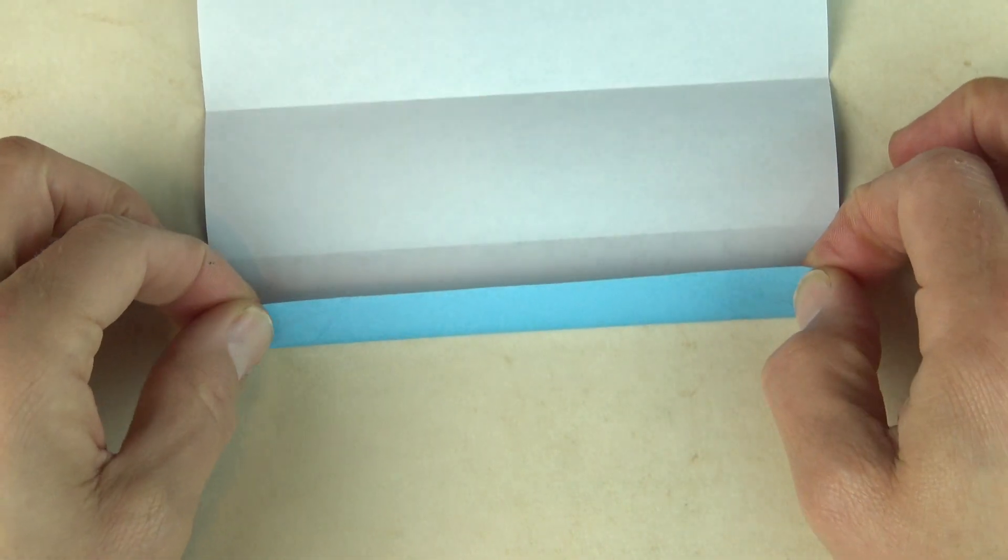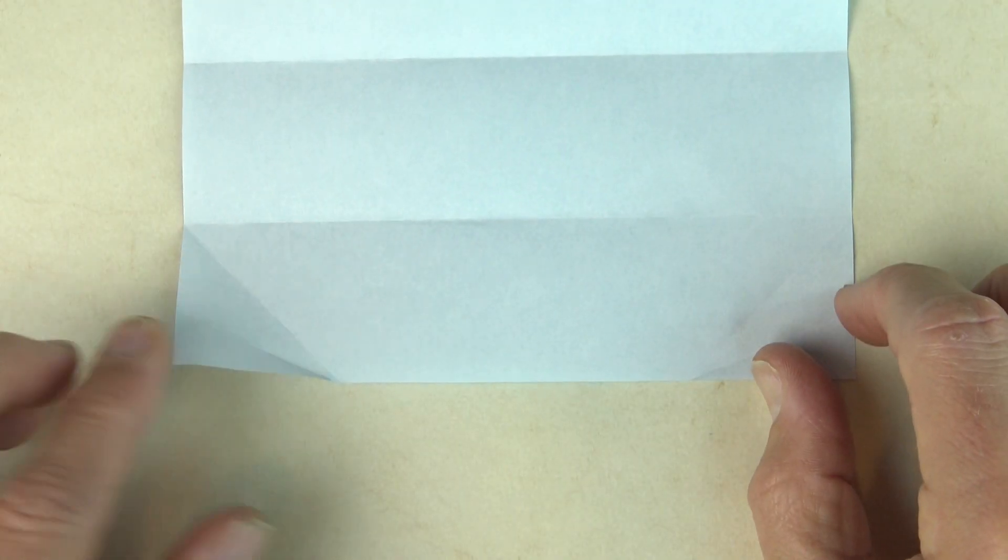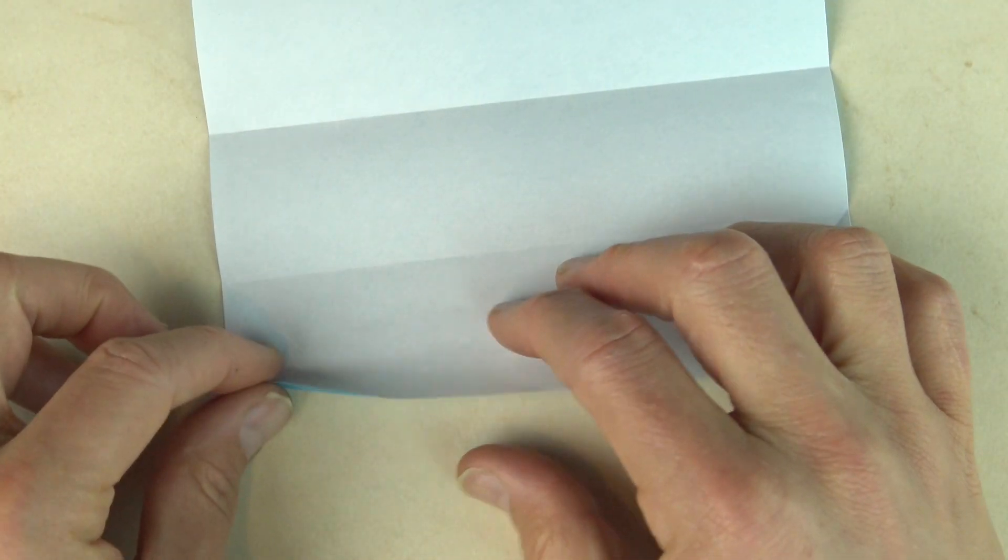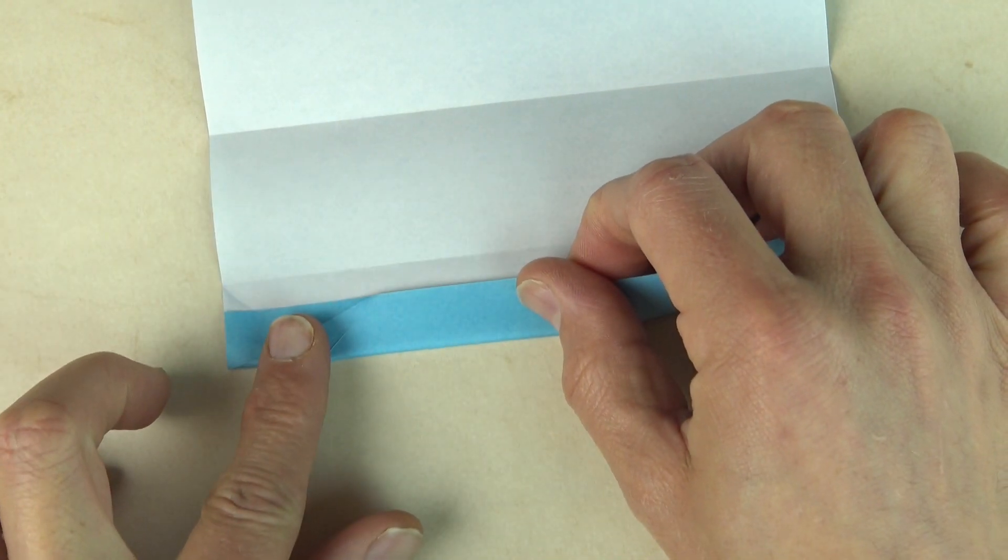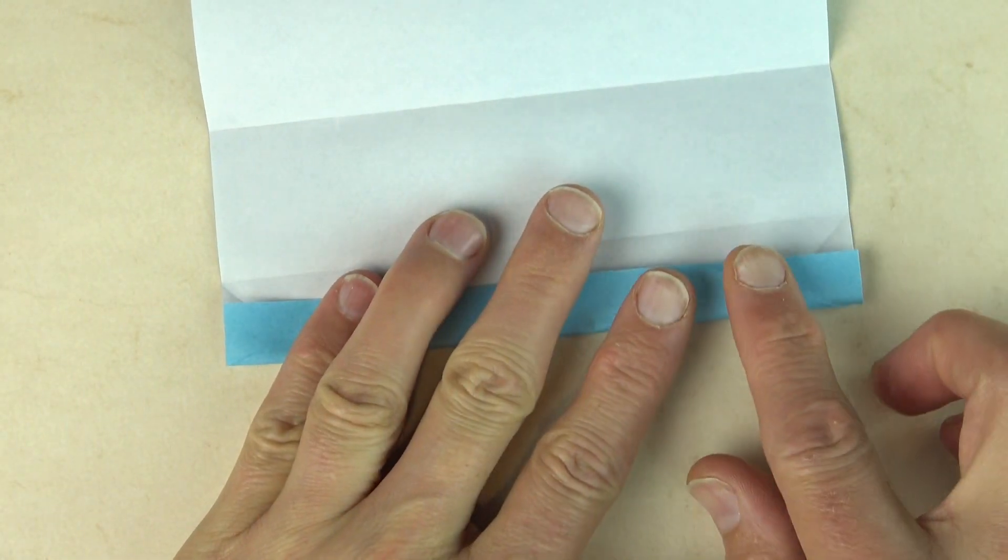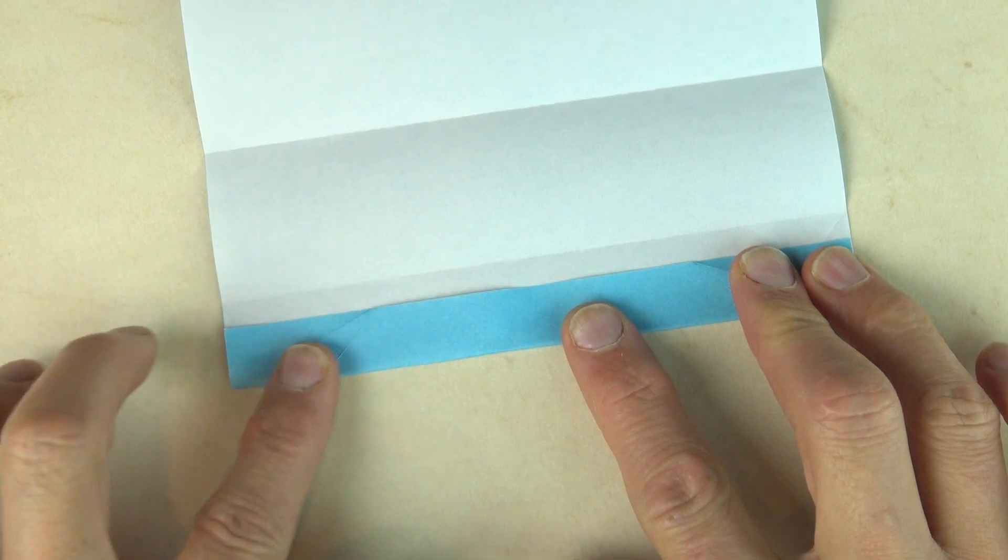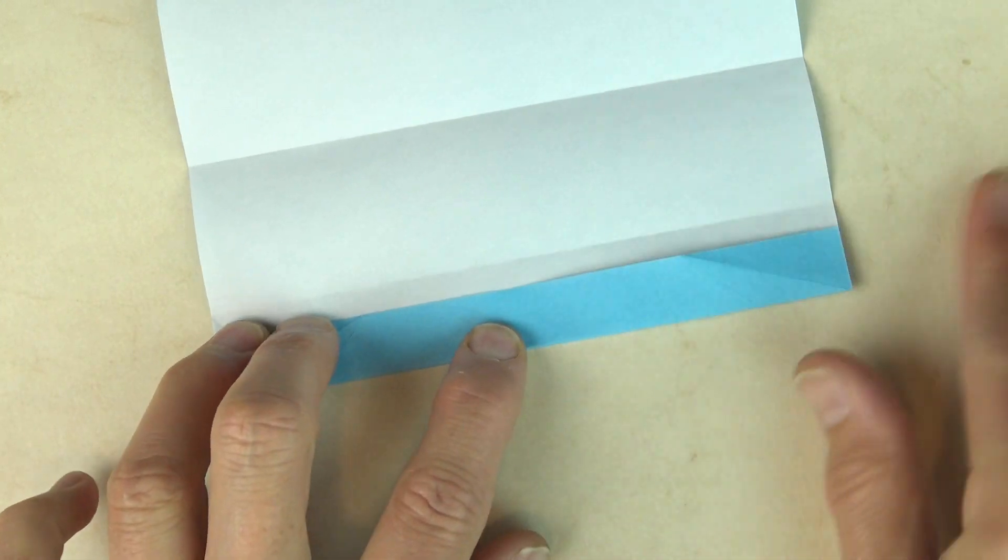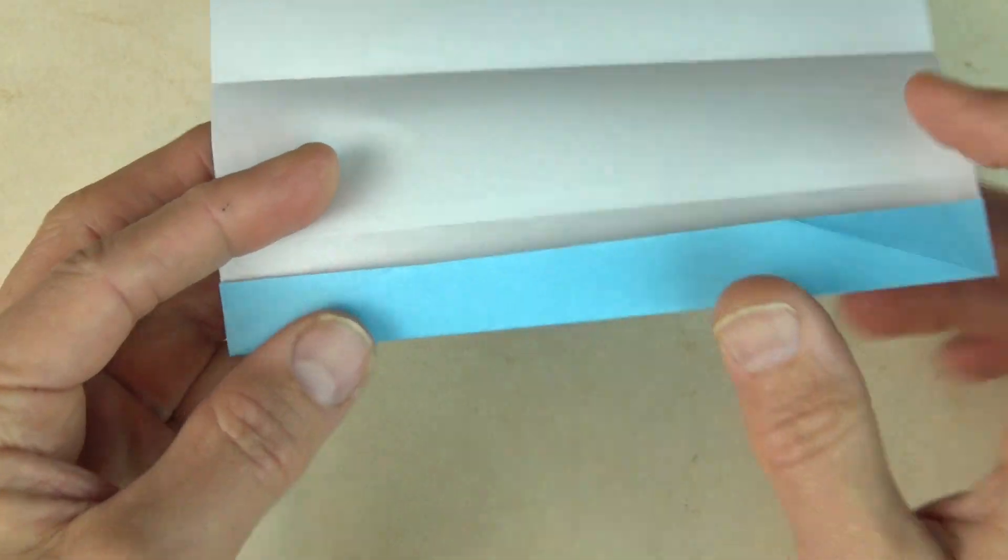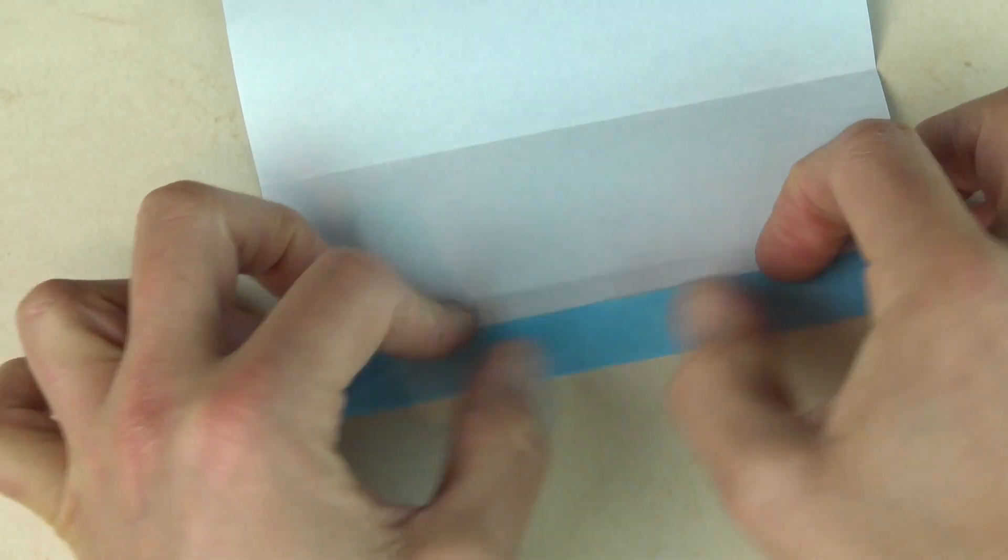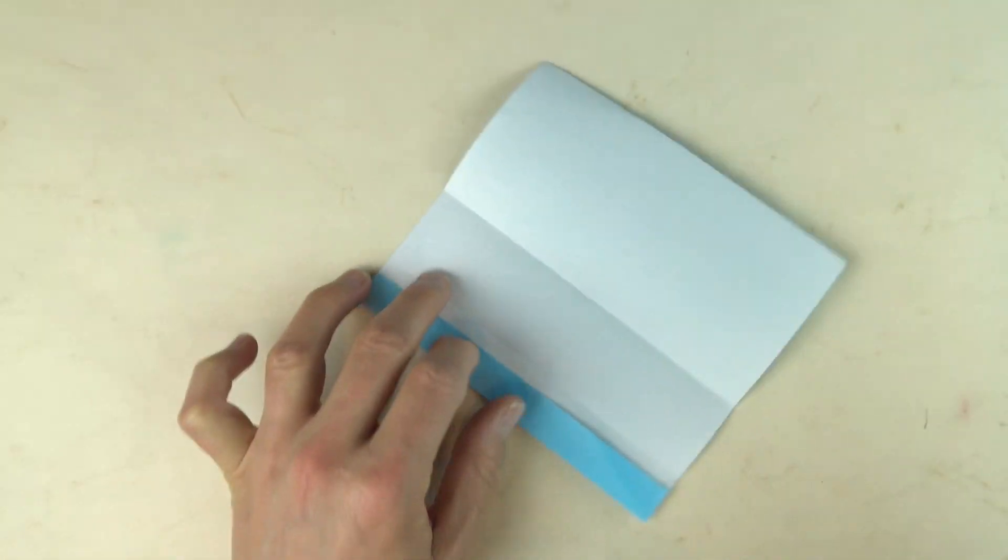And unfold both those flaps. Now fold the bottom edge up on this point and this point where the two creases hit the edges. So it's like that. And the stencil is done.